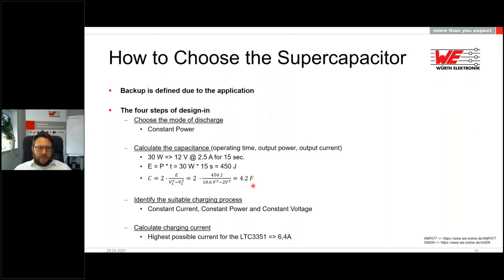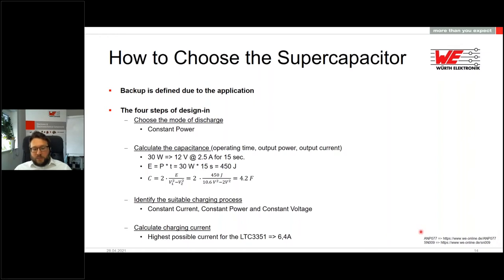Third, identify the charging process. The IC does this ideally: constant current, then constant power, then constant voltage — the best way to get the most energy in. Fourth, calculate the charging current. The highest possible current provided by the IC is 6.4 amps, which is no problem for the supercapacitors since they can handle even more. For more information, see our support note SN009 and application note AN077.